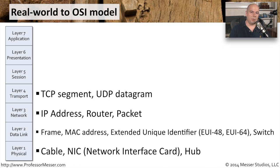Layer 4 of the OSI model is our transport layer. Just as the name implies, these are the protocols that transport information from one side of the network to the other. This is where you would expect to see TCP — Transmission Control Protocol — and UDP, our User Datagram Protocol. These work very differently: TCP, when it sends information, expects to get an acknowledgment back. UDP sends information and has no idea if the data got there — no acknowledgments are sent. But both fit nicely at layer 4 of the OSI model.